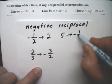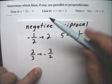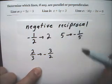So the negative reciprocal of five is negative one-fifth. And those are some examples, and that's what negative reciprocal means.